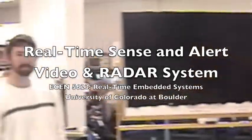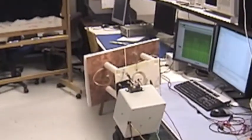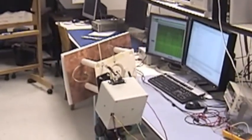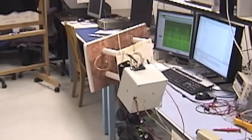This is our ECN 5623 University of Colorado Real-Time Embedded Systems project. For this course we built a radar that auto-tracks and a camera that does image detection and centroid detection. We'll each talk about our contributions to the project and then show a little demo.